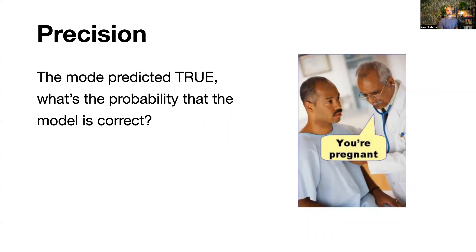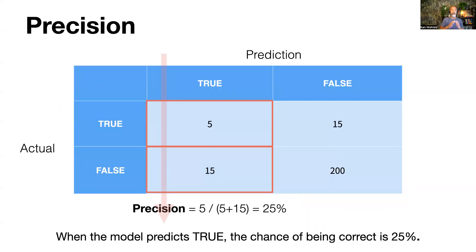In the prediction matrix, when the model predicts true — looking at that column — we have basically 20 total. But out of that, only 5 are actually correct. So when the model predicts true, the chance of being correct is 25% — that's the precision. You can go to the Probability tab in Exploratory to see the distribution between true and false, or go to the Data tab to see the predicted probability for each employee.